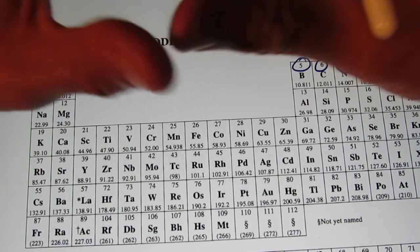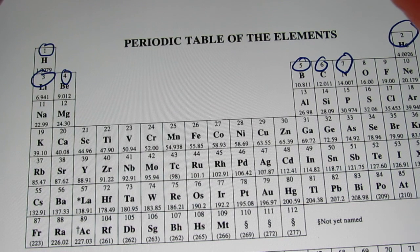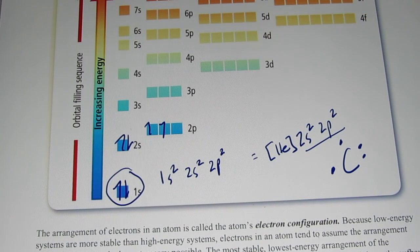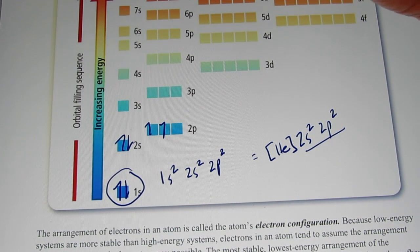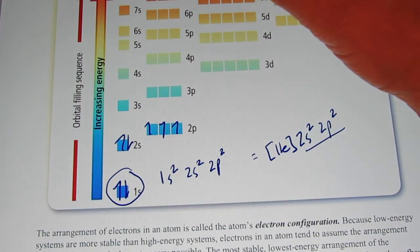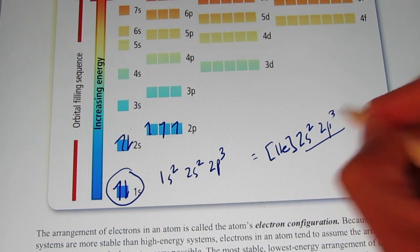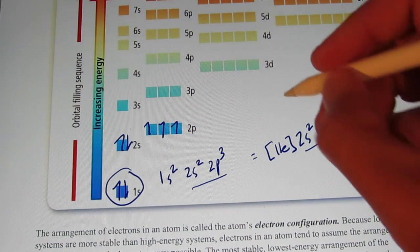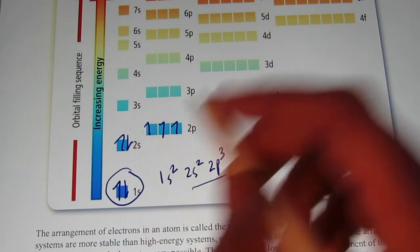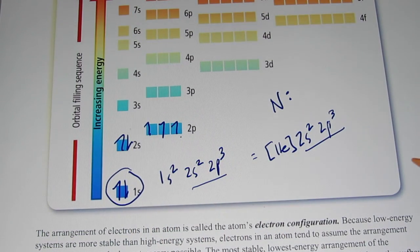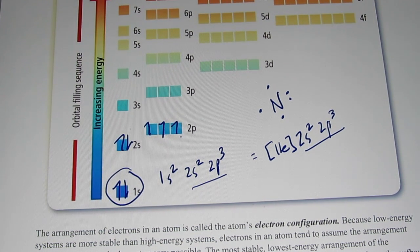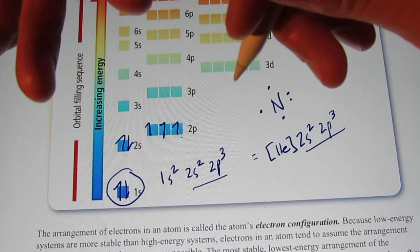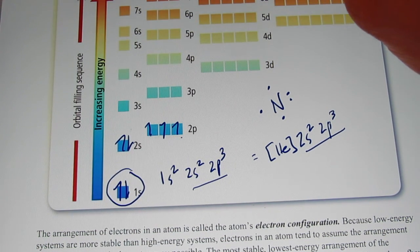Let's move on to nitrogen with seven electrons. Why don't you pause the video and write the electron configuration for nitrogen and its proper dot picture? Welcome back. The configuration for nitrogen ends with 2p3. It has five valence electrons — 2s2 and 2p3. Two of those are paired up and the three in the p orbitals are all by themselves. So you would have one dot here, one there, and one down there. That's exactly what it is, and I think that's a good ending point for today's video. We'll continue with abbreviated electron configurations and dot pictures in our next video. See you soon — bye-bye.